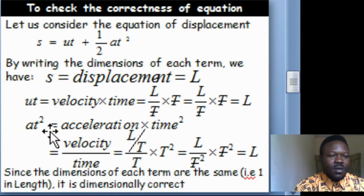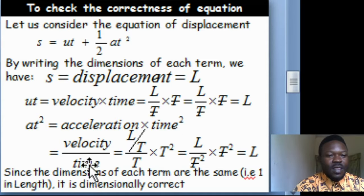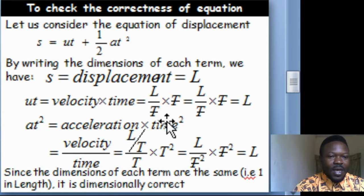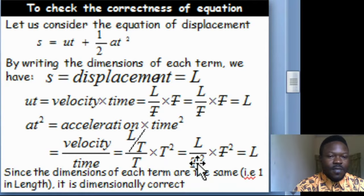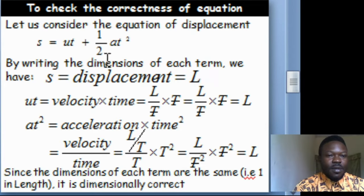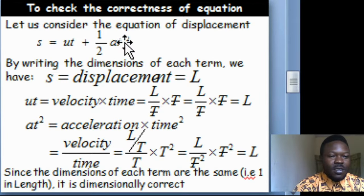For the term AT squared: acceleration is velocity over time, which is L over T, all over T, giving L over T squared. Multiplied by T squared, the T squared cancels, leaving L. So S has dimension L, UT has dimension L, and half AT squared also has dimension L. Each term has dimension 1 in length, and that is why we say the equation is dimensionally correct.